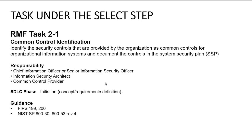There are four tasks under the select step. Task 1 is common control identification: you identify the security controls provided by the organization as common controls for its information systems and document them in the SSP. Responsible parties include the Chief Information Officer or Senior Information Security Officer, Information Security Architect, and Common Control Provider. The SDLC phase is the initiation phase (concept and requirement definition). NIST guidance includes FIPS 199, FIPS 200, NIST SP 800-30, and NIST SP 800-53 Revision 4.